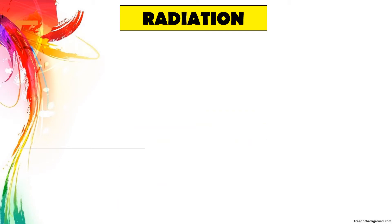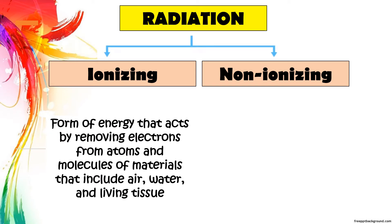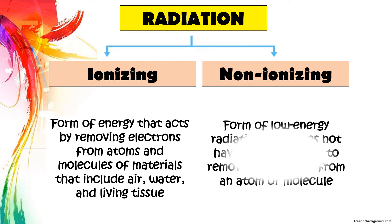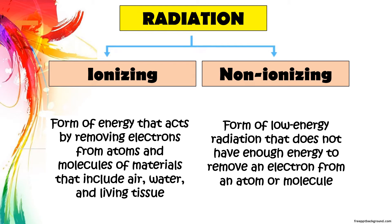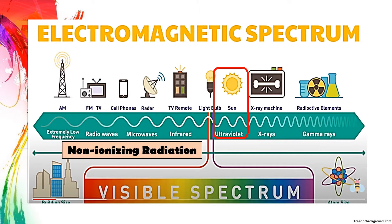Radiation exists all around us, from man-made up to natural resources. It comes in two forms: ionizing and non-ionizing. Ionizing is a form of energy that acts by removing electrons from atoms and molecules of materials that include air, water, and living tissue. Non-ionizing is a form of low-energy radiation that does not have enough energy to remove an electron from an atom or molecule. The dividing line between non-ionizing and ionizing radiation occurs on the ultraviolet part of the EM spectrum. The lower energy on the left side is called non-ionizing radiation, while the higher energy is called ionizing radiation.